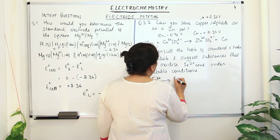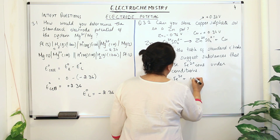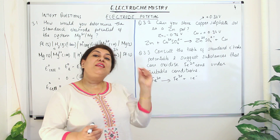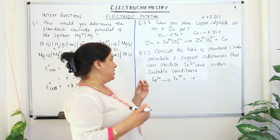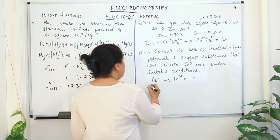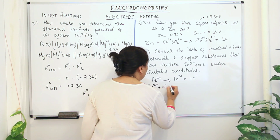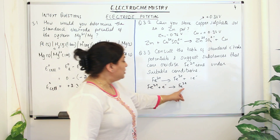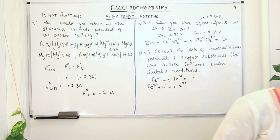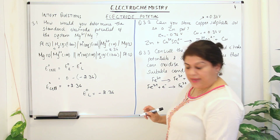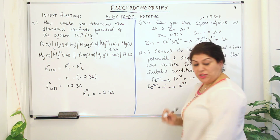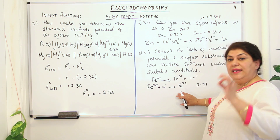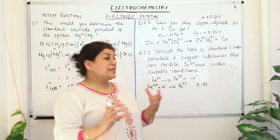If ferrous ions get oxidized, that is Fe²⁺ gets oxidized, it loses an electron: Fe²⁺ → Fe³⁺ + e⁻. If we look at the table of electrode potentials — which give the reduction process — the reverse reaction shown there is: Fe³⁺ + e⁻ → Fe²⁺. The reduction potential for this reaction is +0.77 V.